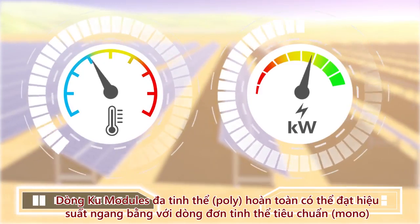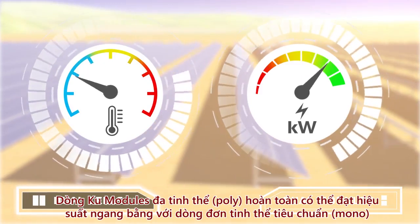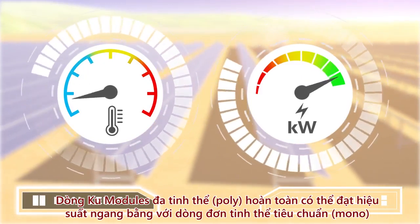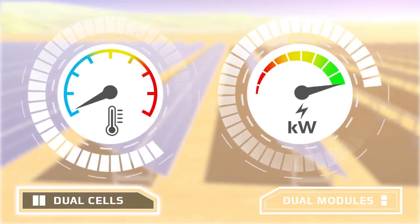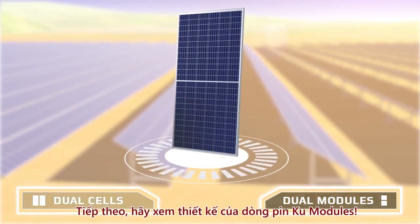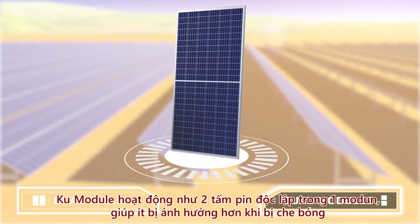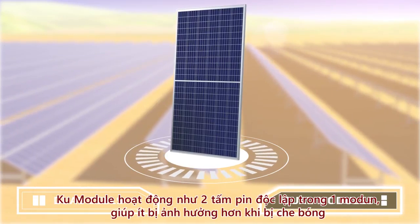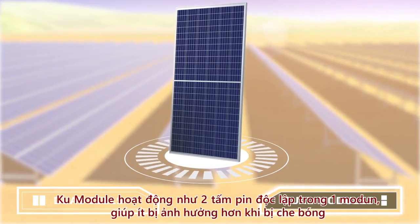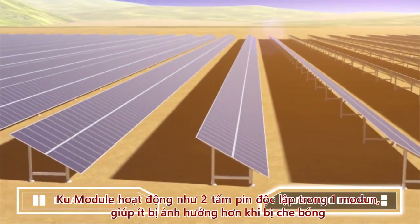Polycrystalline KOO modules are available at the same power classes as standard monocrystalline modules. Next, let's look at dual module design. KOO modules operate like two modules in one, which gives KOO modules better shading tolerance.